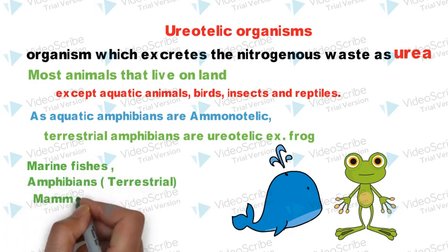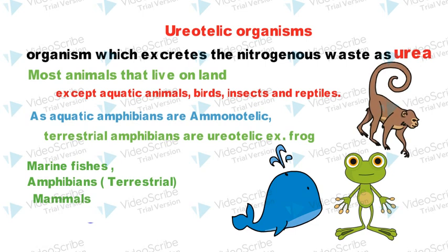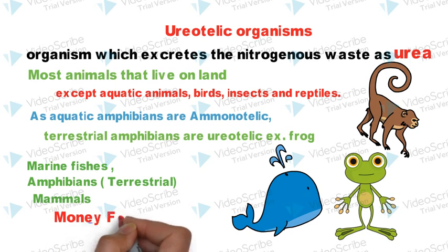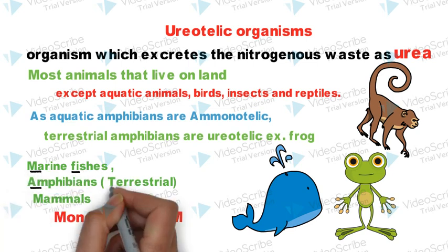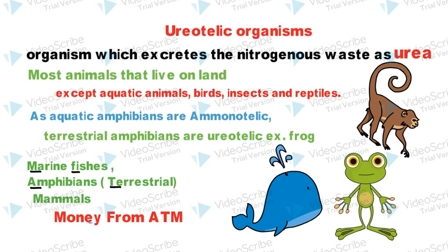The mnemonic to remember Ureotelic organisms is 'money from ATM'. Here 'money from' represents marine fishes, AT represents amphibians terrestrial, and M for mammals.